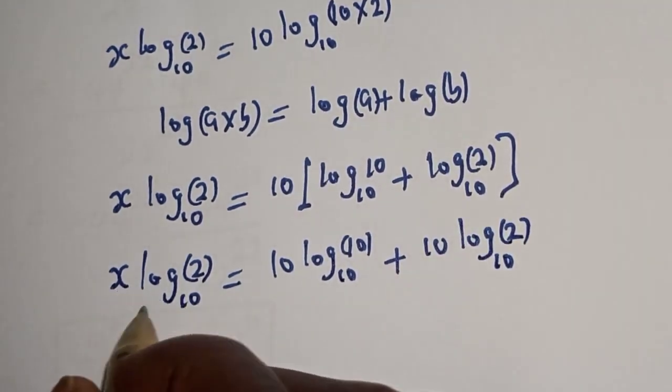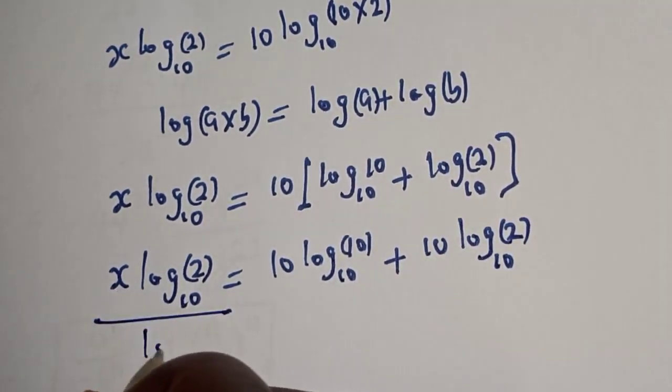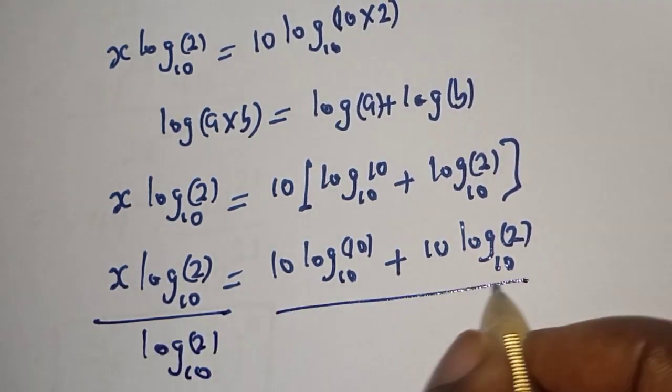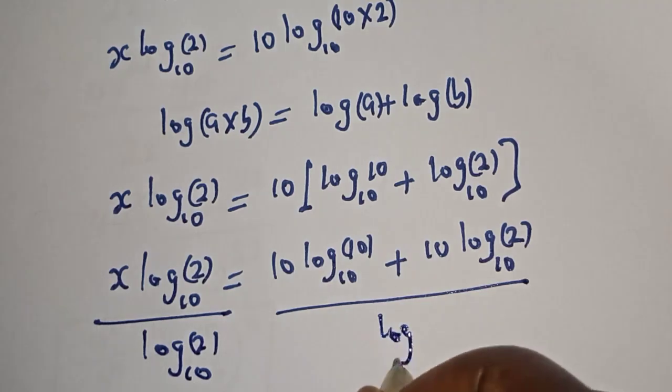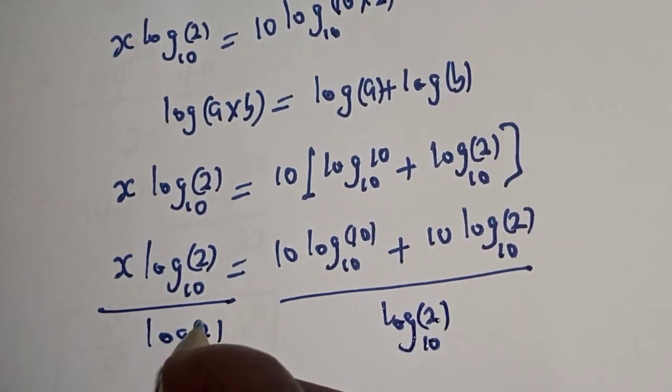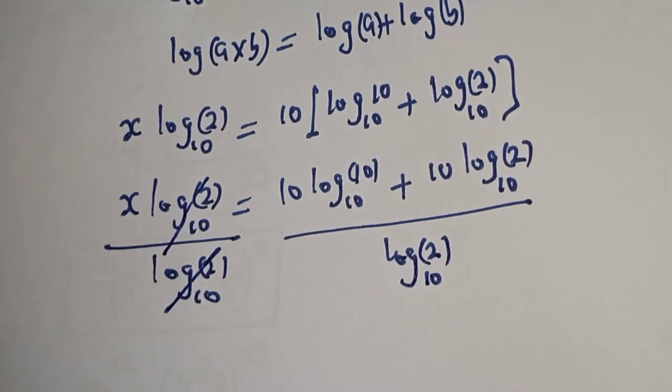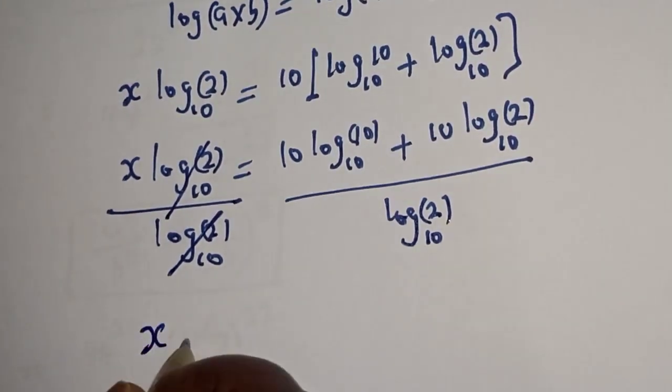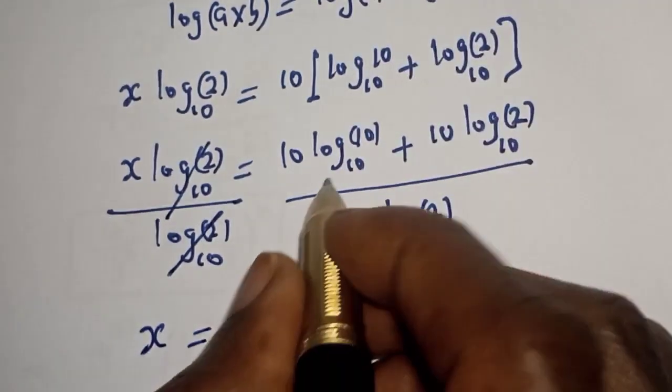Now we are looking for the value of x. Let's divide both sides by log 2 base 10. This will cancel, and x is equal to...